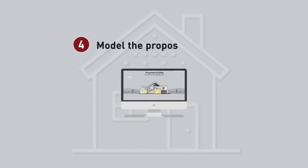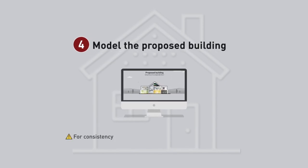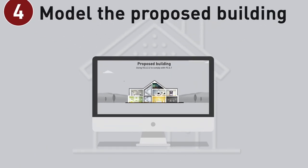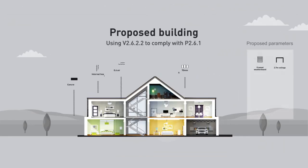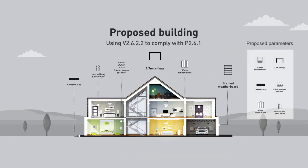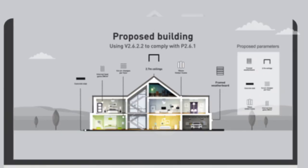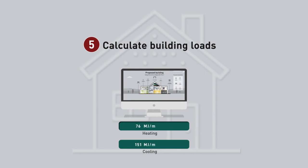Step four: model the proposed building. Certain building aspects in this model must be the same as in the reference building model, but this time include the specific design features proposed for the building. Step five: calculate the loads for the proposed building.